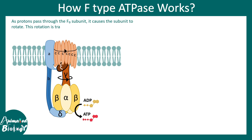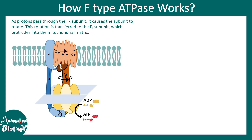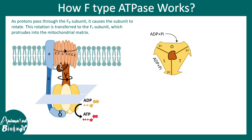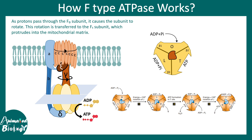Looking at a cross-section of the alpha-beta subunit of F type ATPase, the conformations look like loose, open, and tight states. In the open configuration, ADP and inorganic phosphate bind to the groove. The conformation moves from loose to tight; in the loose conformation ADP and Pi come together, and in the tight conformation they form ATP. The entire head of the dynamo rotates through these different rotational cycles, creating ATP.